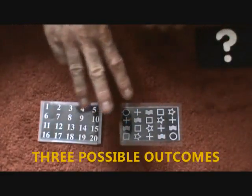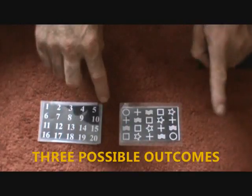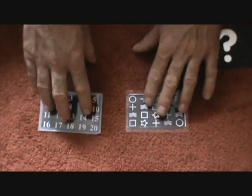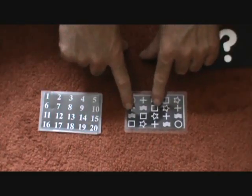There are three possibilities. They can each think of the plus, each think of the square, or each think of the plus and the square.